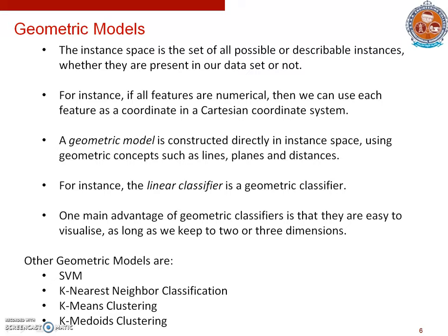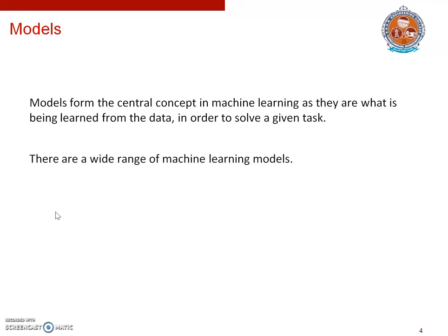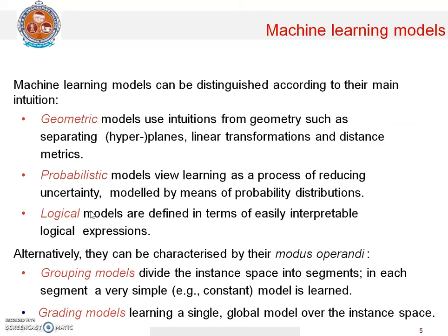What is a model? A model forms the central concept in machine learning as it is what is being learned from data in order to solve a given task. There are a wide range of machine learning models. Machine learning models can be classified into geometric models, probabilistic models, and logical models. Geometric models are based on intuition from geometry such as separating hyperplanes, linear transformations, and distance metrics.